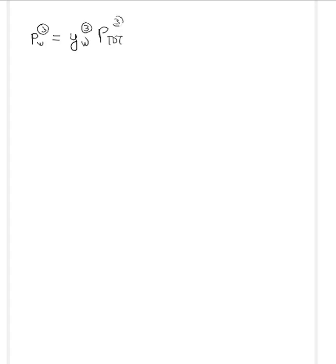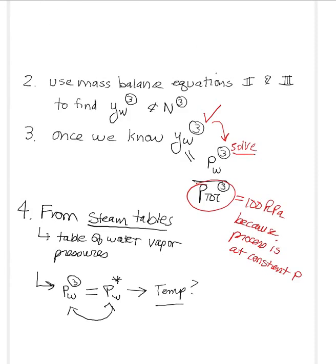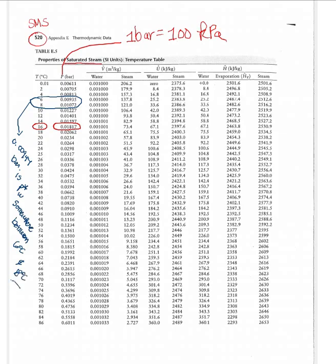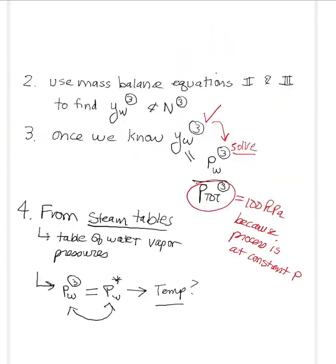We know that the partial pressure of water in stream 3 equals the mole fraction of water in stream 3 times the total pressure. So the partial pressure of water in stream 3 equals 0.00944 bar. Going back to the steam tables, we can see that 0.00944 bar is the vapor pressure of water somewhere between 6°C and 8°C.